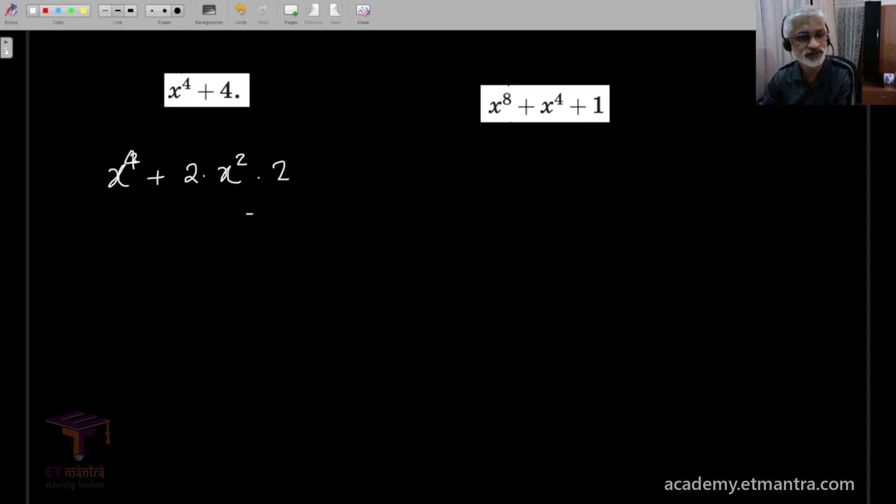Now, since you have added something, you have to subtract the same number, which is 4x square. And now you see that this expression is completing the square, so it's a perfect square. But this term also turns out to be a perfect square and therefore, you can write this as x square plus 2 whole square minus 4x square. And this is, of course, easily factorizable to two terms.